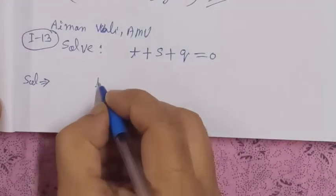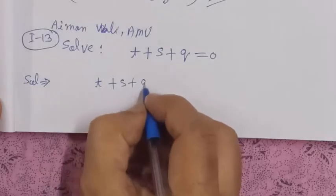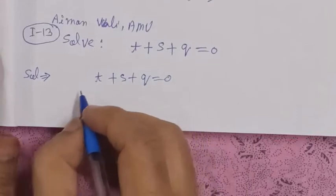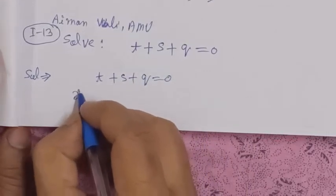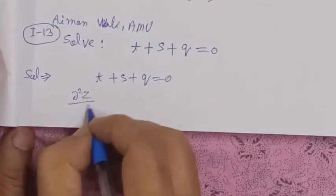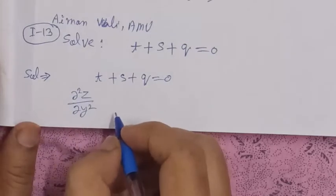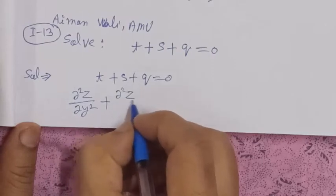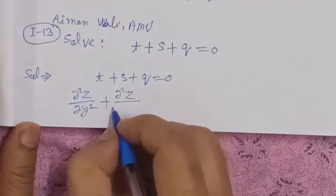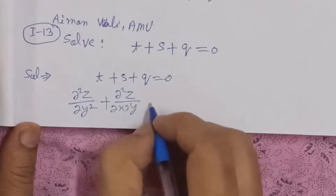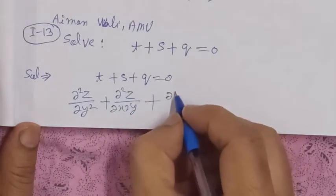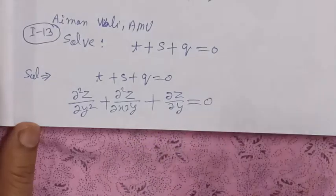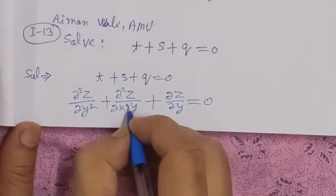The differential equation is t plus s plus q equals zero. Let me explain: t denotes the second derivative of z with respect to y, del squared z over del y squared. s denotes the second derivative of z with respect to x and y. And q denotes the first derivative of z with respect to y.